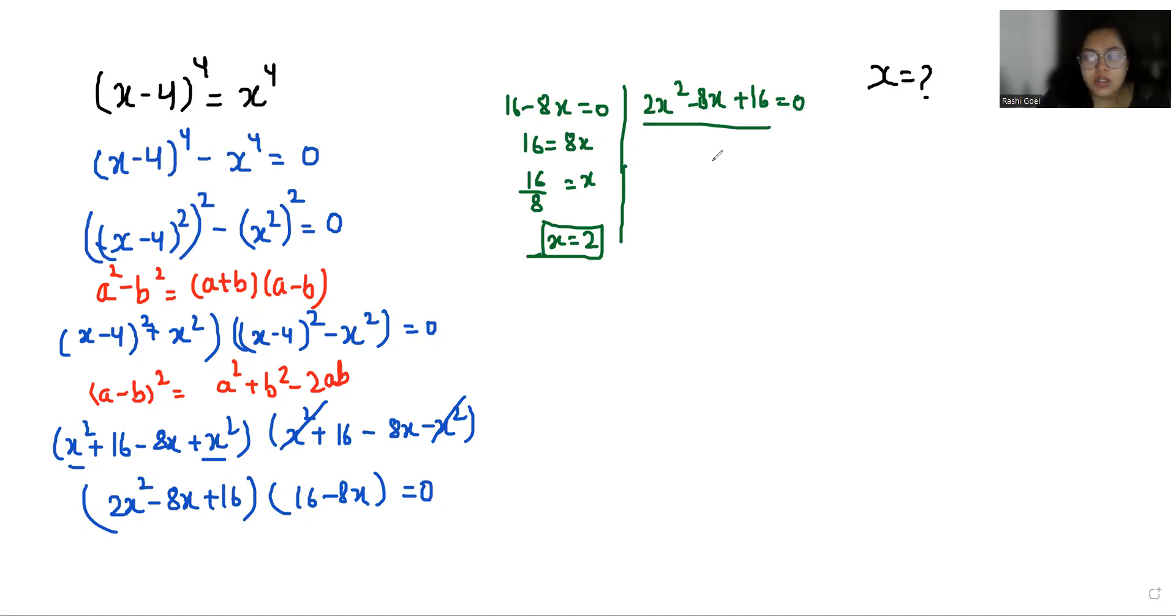Now let's look at the quadratic equation. We can use the quadratic formula which is x = (-b ± √(b² - 4ac))/2a, where a is 2, b is -8, and c is 16.